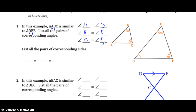The pairs of corresponding sides: by looking at the picture, side AB goes from the one-tick to the two-tick mark, so that corresponds to side DE. The ratio of AB over DE equals AC over DF — that's one tick to three ticks. And in between the two ticks and the three ticks, BC would go with EF. The order of the letters tells you which sides go together.